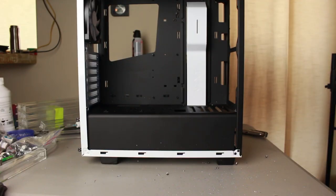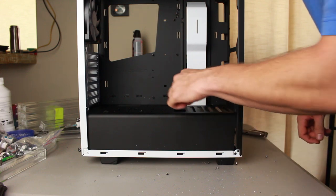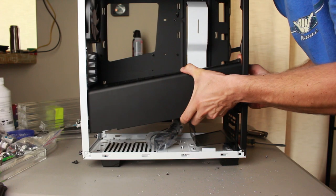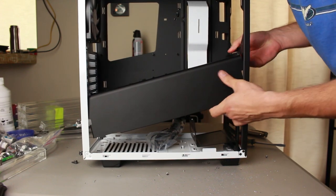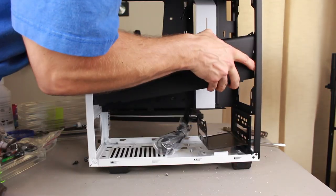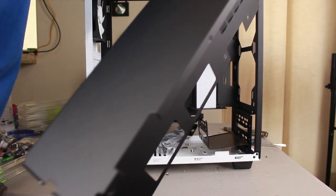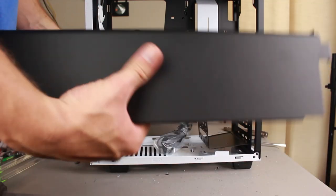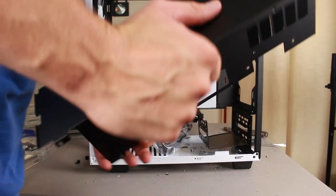Now that should be all of the rivets. Hopefully there's no more. I'm going to have to flex the case a little bit to get this out. There it goes. All right, well there is the PSU shroud. It's now out, so I don't have to worry about this anymore.